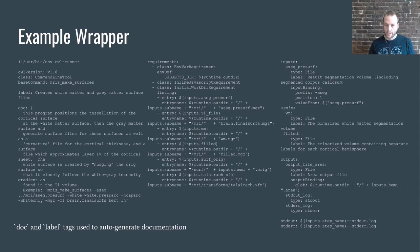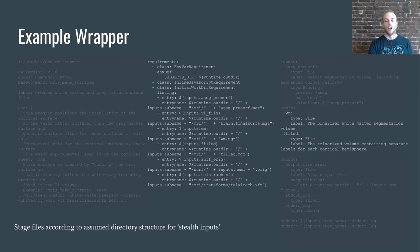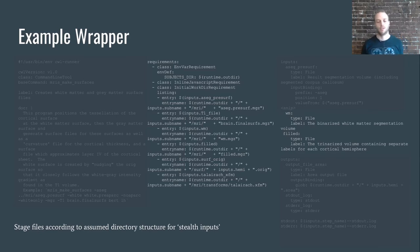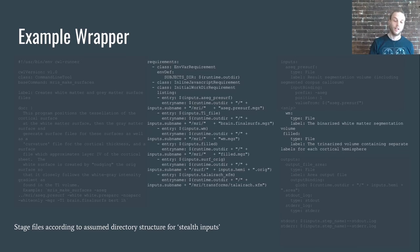What we really loved about CWL is how it could gracefully handle this legacy code base. We use doc and label tags extensively to auto-generate documentation. FreeSurfer also had what I like to call stealth inputs — a bunch of the binaries would just assume a file is located at a specific file path based on either the subject directory or the subject name. That location can't be overridden on the command line and it's hard to tell what inputs are used in each binary. Not only does CWL gracefully handle this, but it allows us to formally define all these stealth inputs.